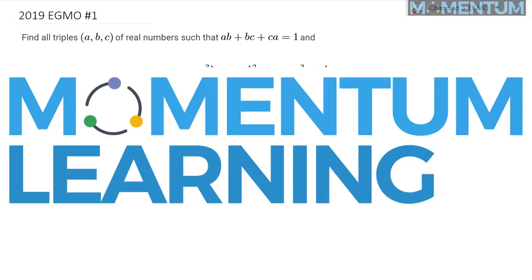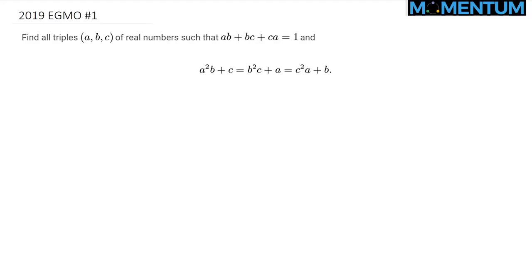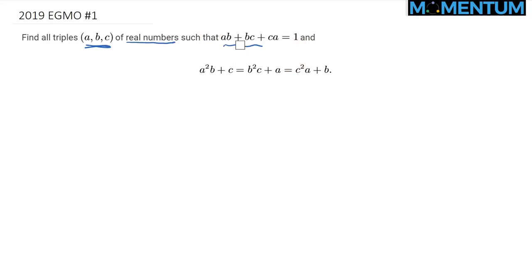This is the 2019 European Girls' Mathematical Olympiad, EGMO, problem number one. Here is a view of this algebra problem. We would like to solve this equation given this constraint for the real numbers A, B, and C. We want to find all solutions to this system of equations.